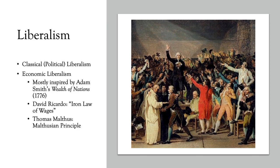Some key ideas in classical political liberalism: the individual is endowed with natural rights — an idea going back to John Locke in the late 17th century. According to Locke, those rights were life, liberty, and property. We also see this in the American Declaration of Independence as life, liberty, and the pursuit of happiness. Liberalism is fundamentally about protecting the freedom and well-being of the individual, and it holds that the primary purpose of government and society is to protect the natural rights of individuals.